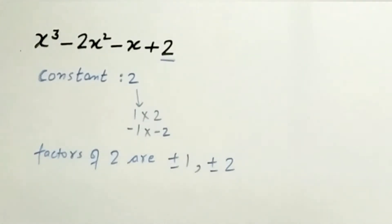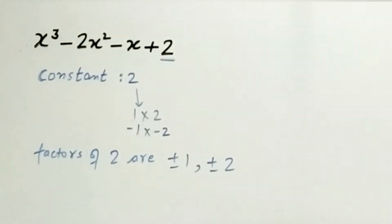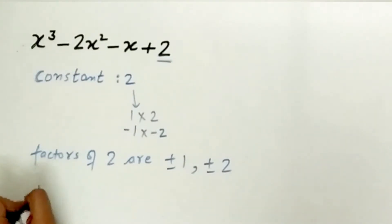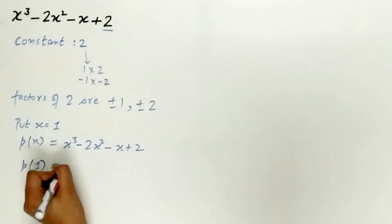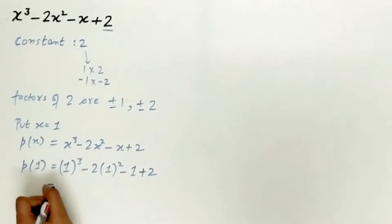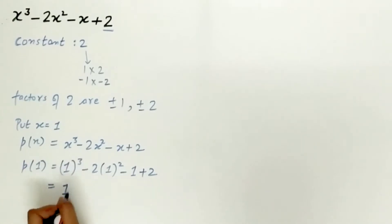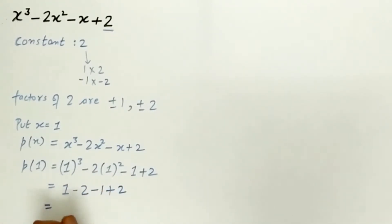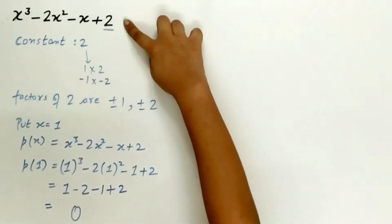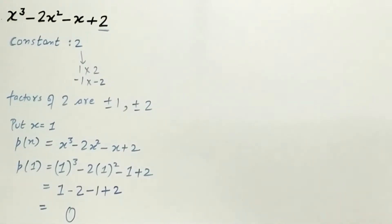Step 2 is to find the value of x for which the given cubic polynomial becomes equal to 0. Put x equal to 1, which is a factor of 2. 1 whole cube minus 2 multiplied by 1 square minus 1 plus 2: 1 minus 2 minus 1 plus 2 is equal to 0. So x equal to 1, meaning x minus 1 is a factor of the given cubic polynomial.